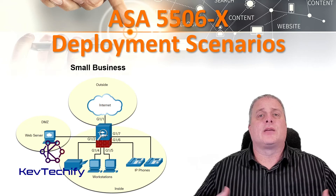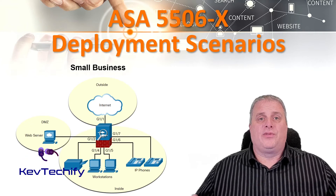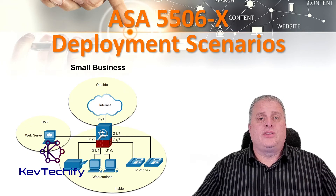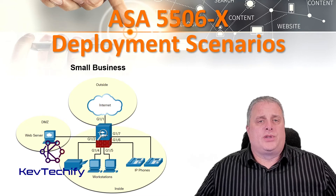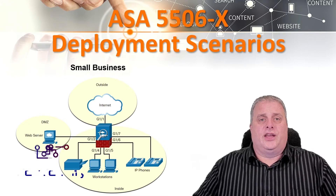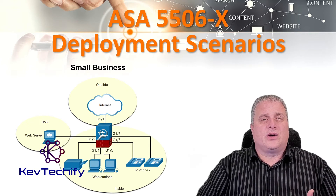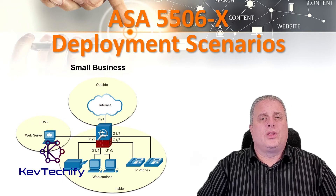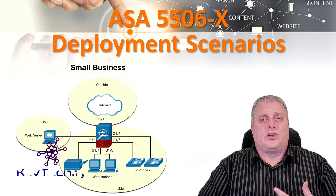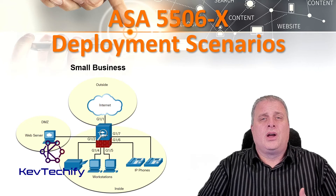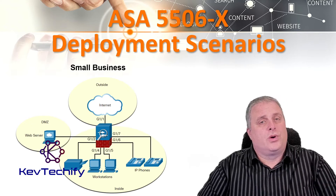In a small business, the ASA 5506X can be deployed with two different protected network segments. One segment is the inside network, VLAN 1, which contains workstations and IP phones. The other segment is the DMZ, typically VLAN 3, which connects a company web server. The outside interface, VLAN 2, is used to connect to the internet. So VLAN 1 is inside with a trustworthiness score of 100, VLAN 2 is outside with a score of 0, and the DMZ, VLAN 3, is traditionally set up with a score of 50.